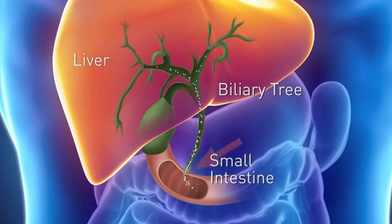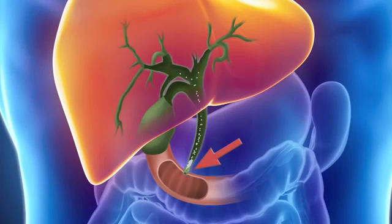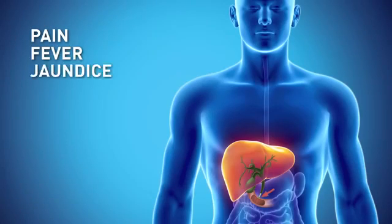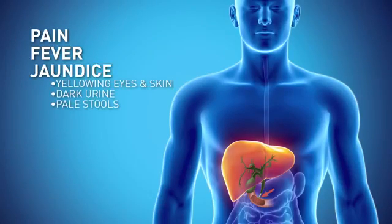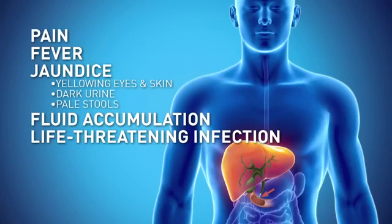When your bile ducts have blockages from cancer, the bile salts begin to build up in your liver and blood. You may experience pain and fever, and symptoms of jaundice — yellowing of the eyes and skin, dark urine, and pale stools. Fluids may accumulate in your abdomen. This is a very serious condition, and if the blockage is not corrected, it can lead to a life-threatening infection or even liver failure.